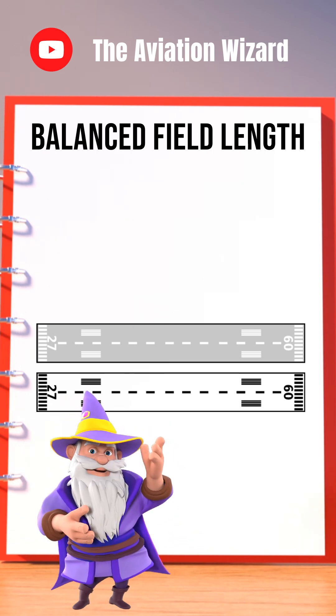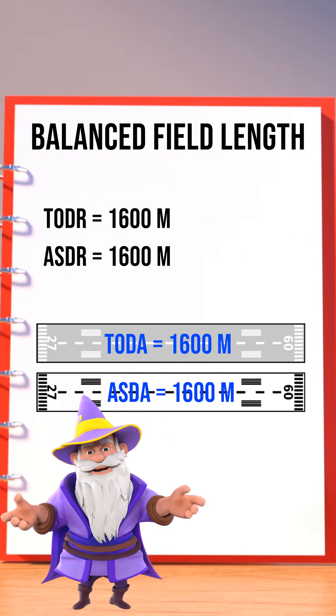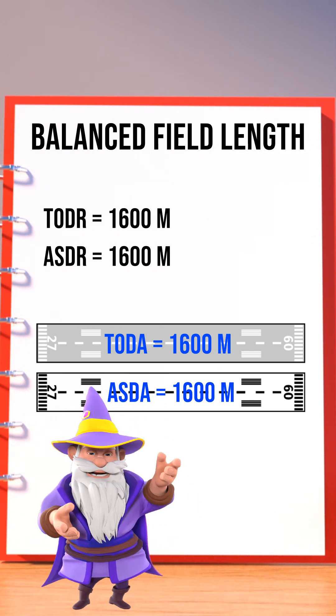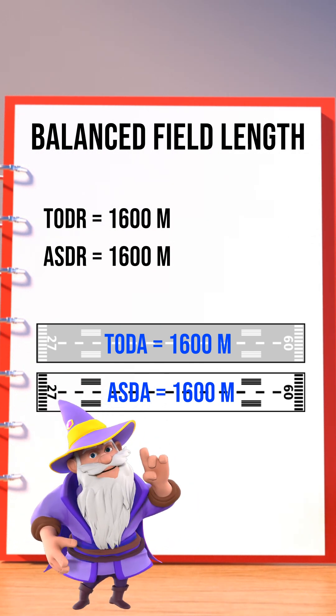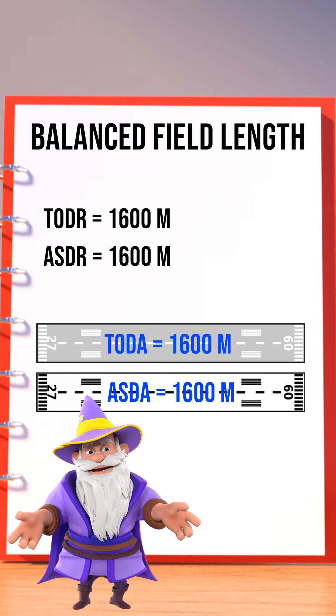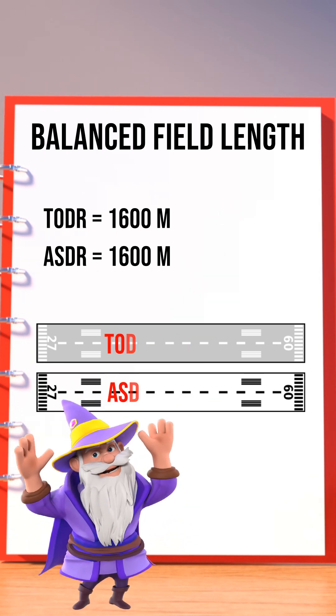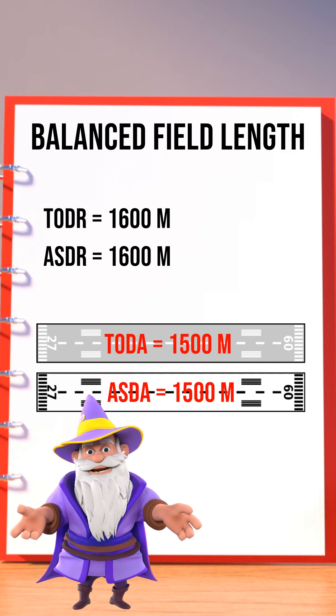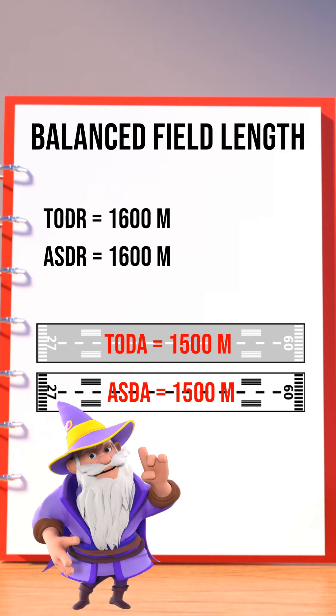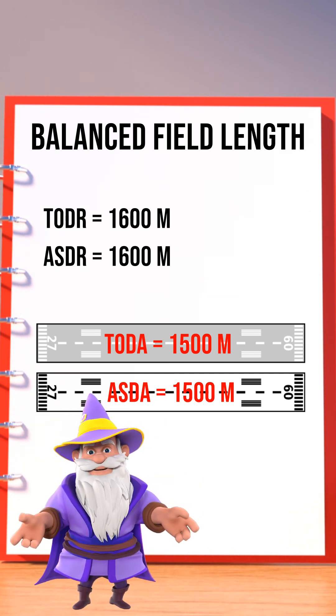Imagine you need 1,600 meters to stop from V1 and 1,600 meters to go with an engine failure. That runway is balanced, but if you only have 1,500 meters, you're below balanced field length and you're operating with increased risk or reduced takeoff weight.